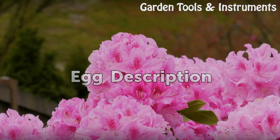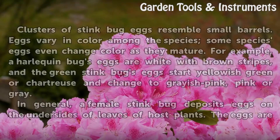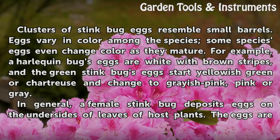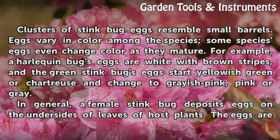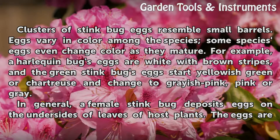Egg Description. Clusters of stink bug eggs resemble small barrels. Eggs vary in color among the species, and some species' eggs even change color as they mature. For example, a harlequin bug's eggs are white with brown stripes, and the green stink bug's eggs start yellowish-green or chartreuse and change to grayish-pink, pink, or gray.